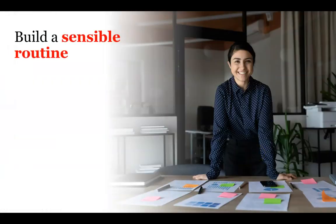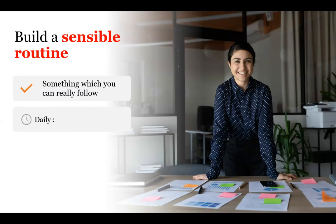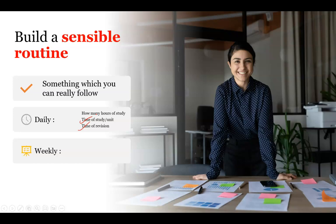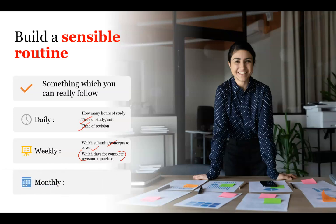You also have to build a sensible routine — something you can actually follow. For your daily routine: decide how many hours to study every day, the time of study, which unit to cover, how many hours per unit, and when to do daily revision. For your weekly routine: plan which units or concepts to cover each day, and set specific days for complete revision and practice — for example, keeping Saturday and Sunday for full revision of what you studied in the week.